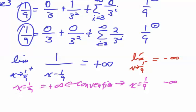So, the convention is x is not equal to one ninth and limit is not equal to positive infinity.